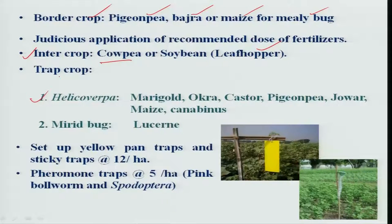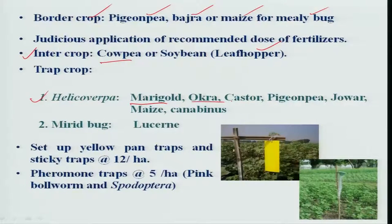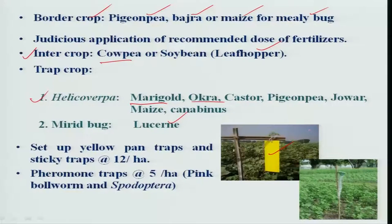The trap crop method can also be followed. Marigold, okra, and castor act as trap crops for Helicoverpa armigera, and lucerne can be used as a trap crop for mirid bug. Yellow sticky traps attract many sucking insect pests like whitefly and thrips. For pink bollworm monitoring, delta traps or sleeve traps can be used.